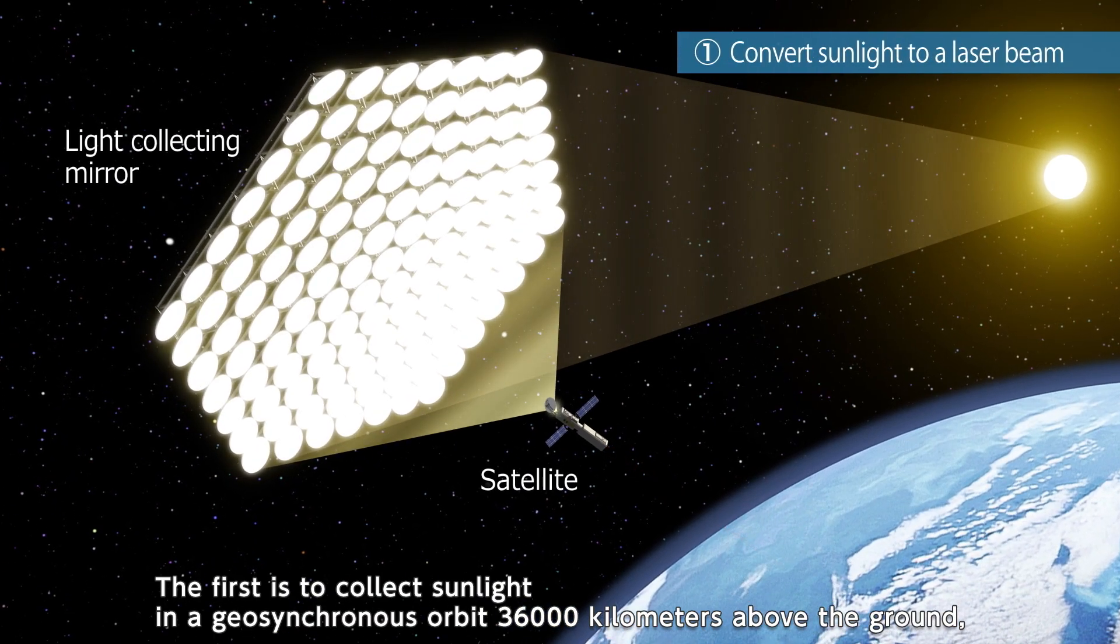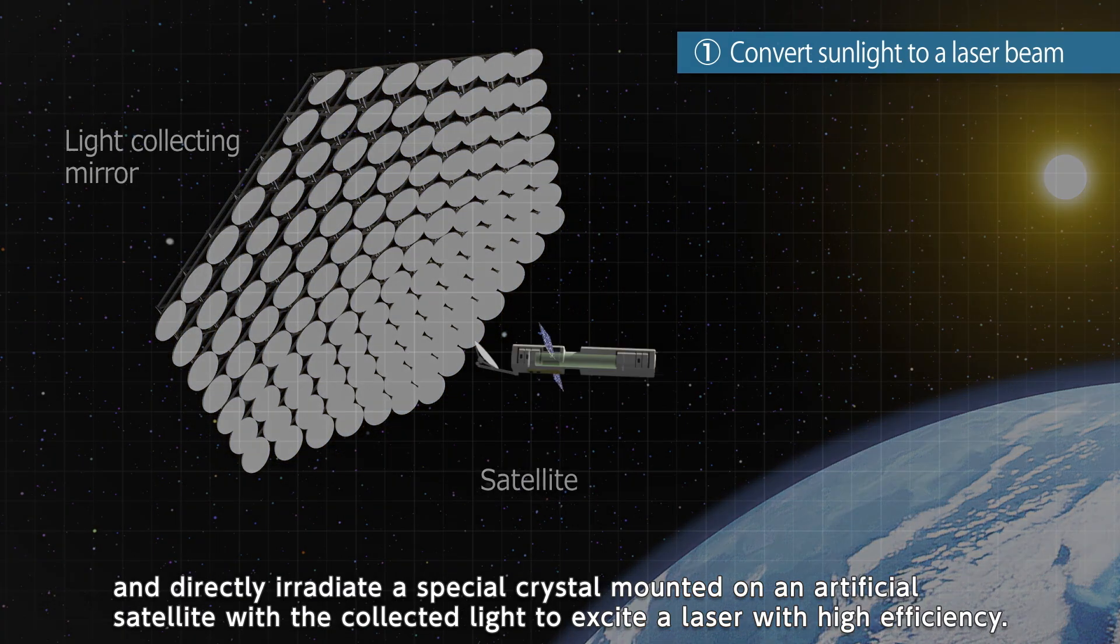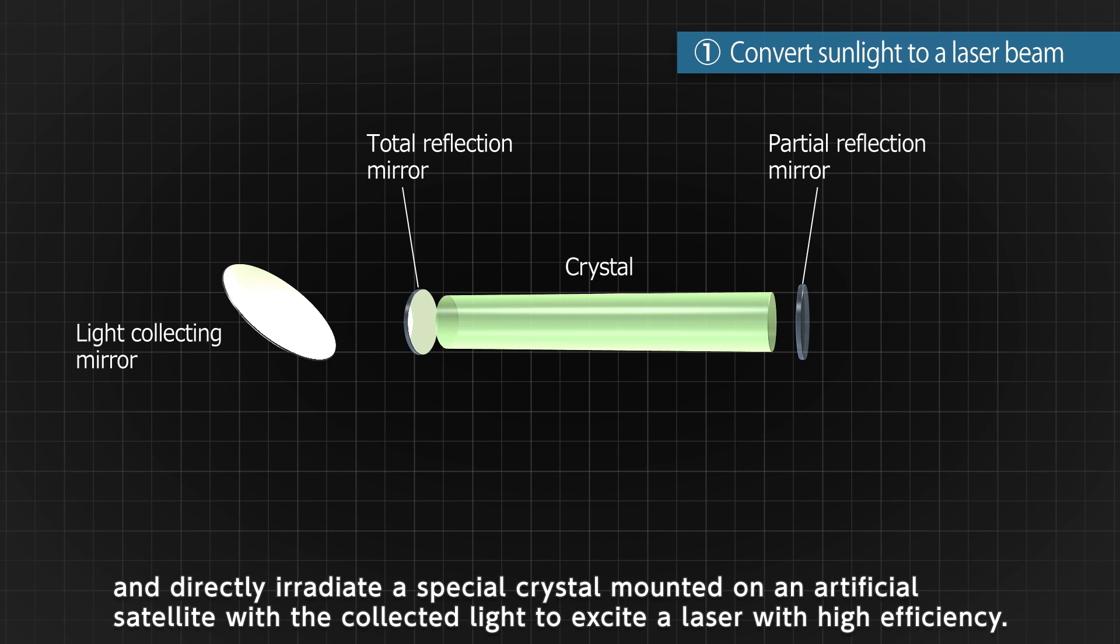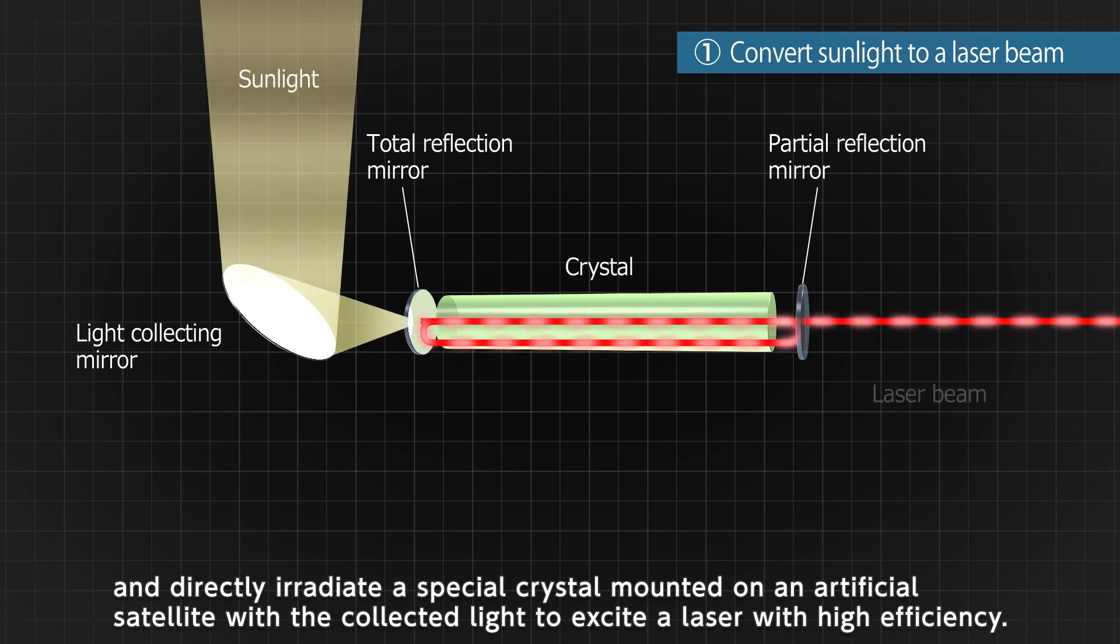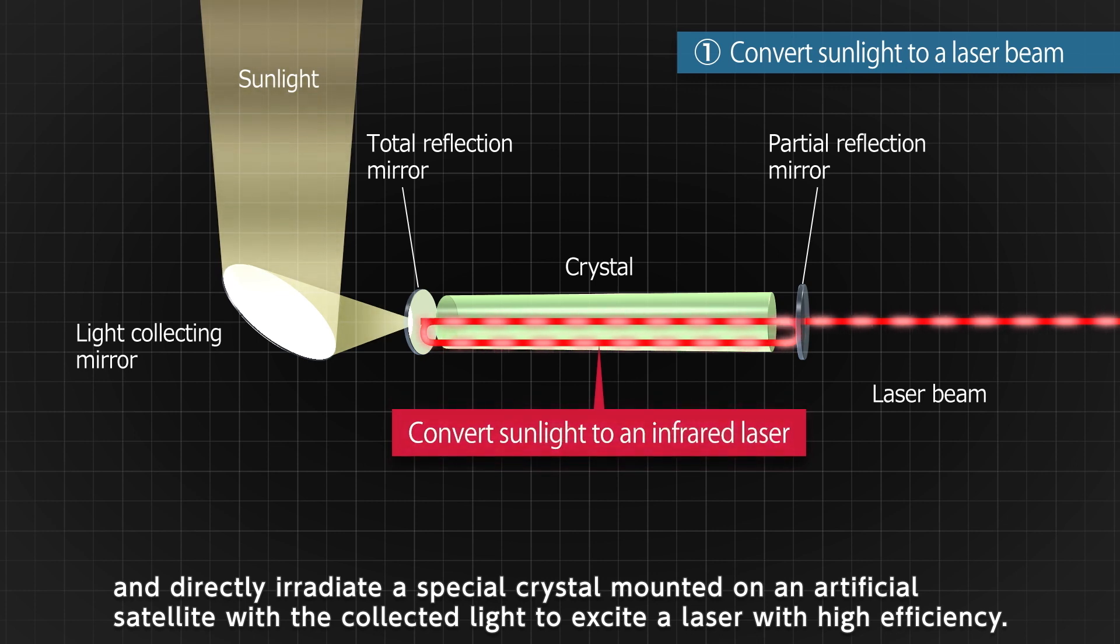The first is to collect sunlight in a geosynchronous orbit 36,000 kilometers above the ground and directly irradiate a special crystal mounted on an artificial satellite with the collected light to excite a laser with high efficiency.